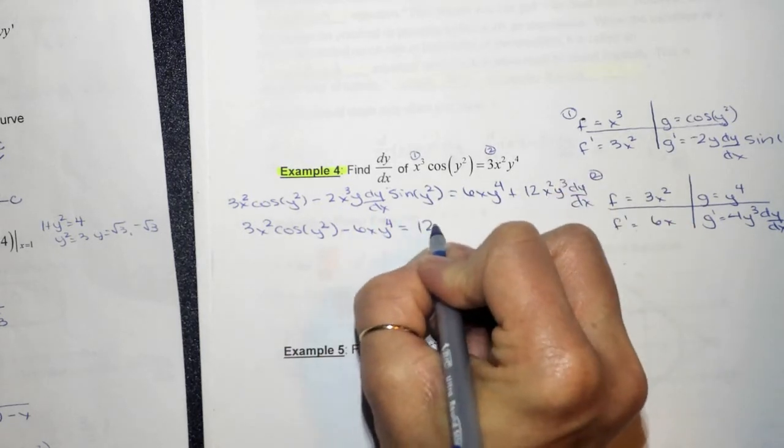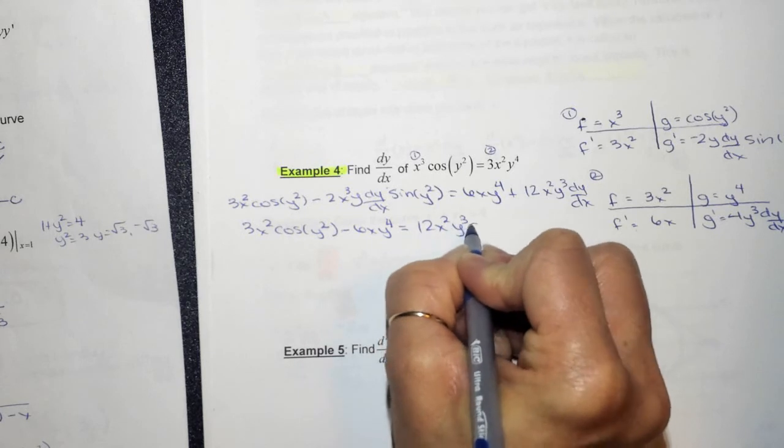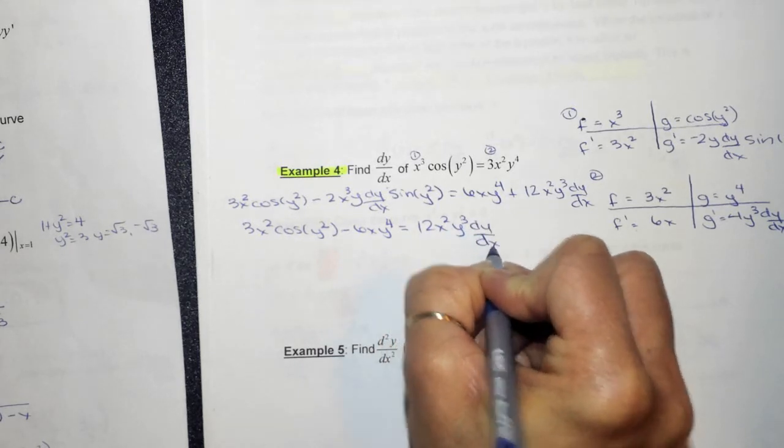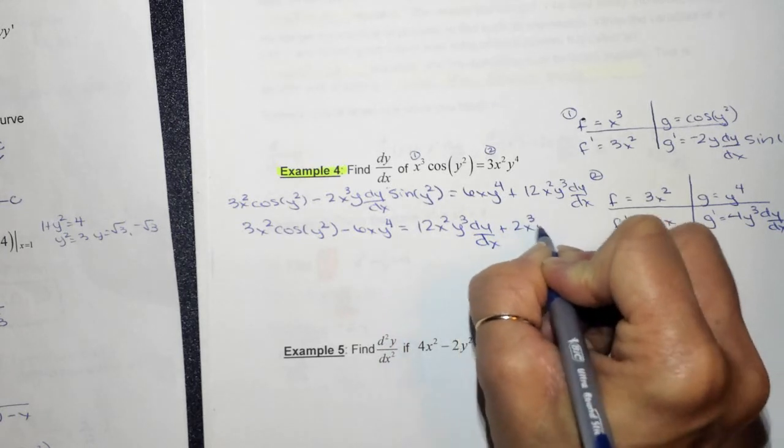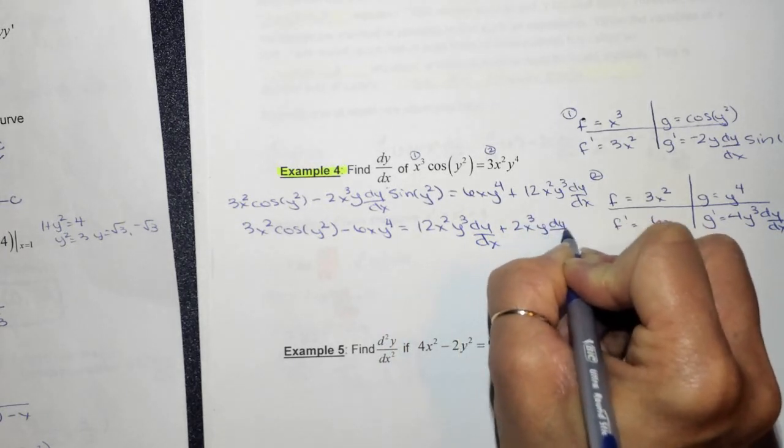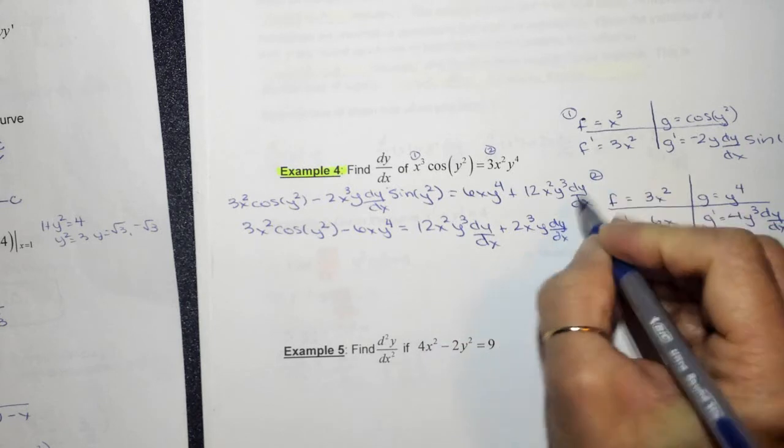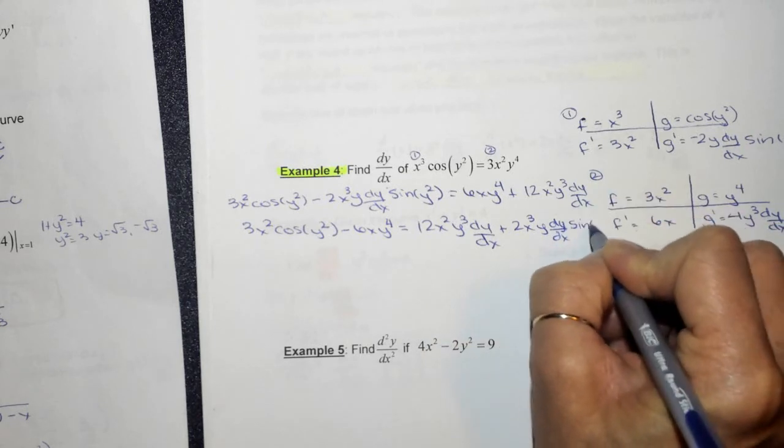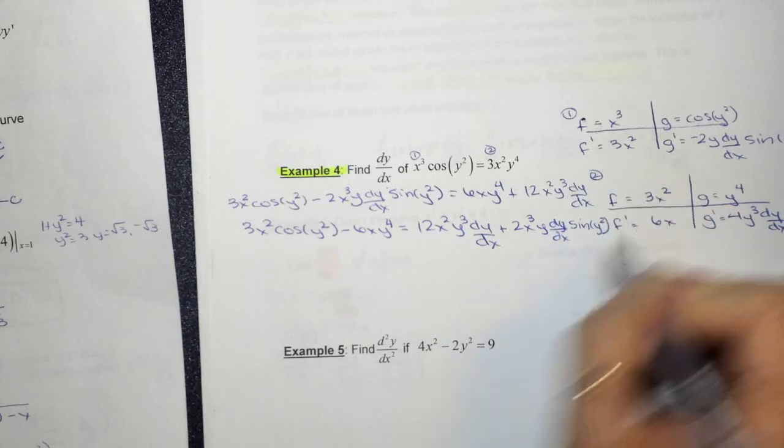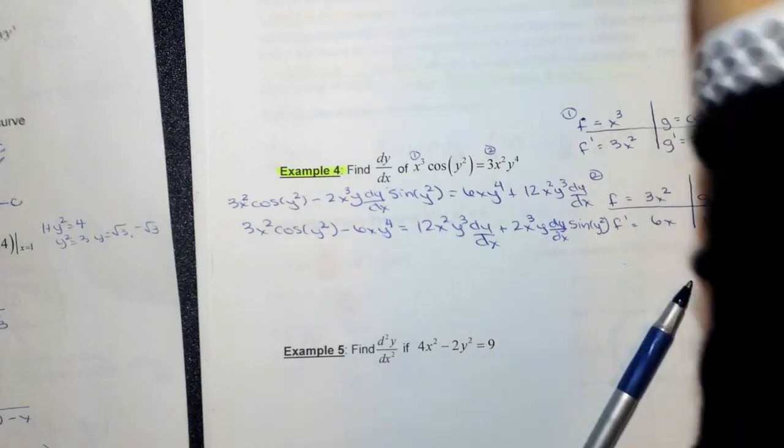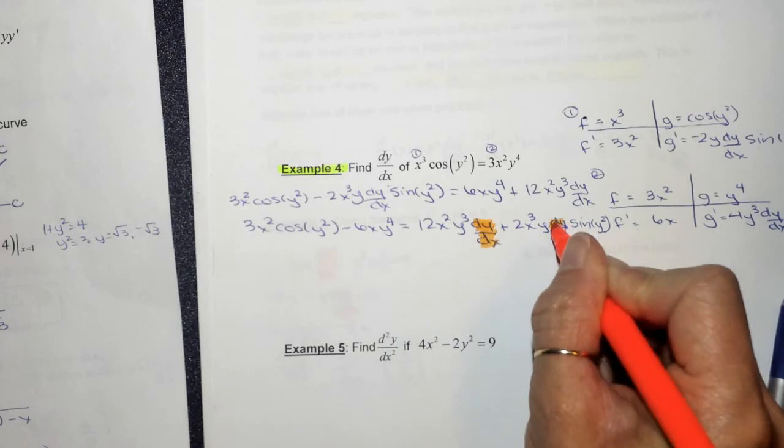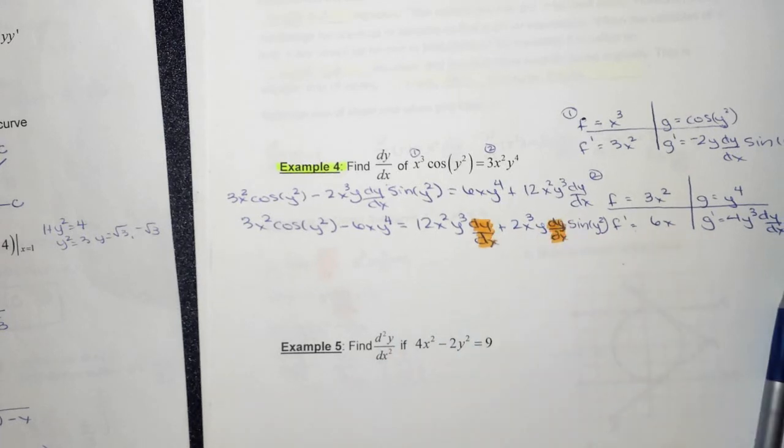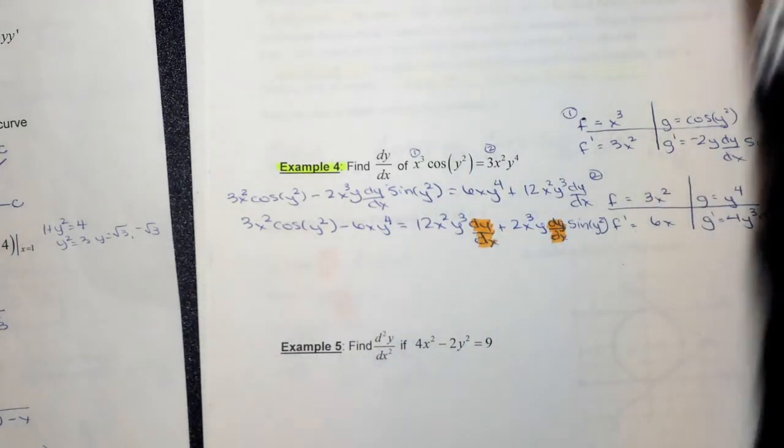Is equal to, I'm adding this. So this is still here. And then I've got plus 2x cubed y dy dx, sine of y squared. Okay. So on this side, you notice we have two terms with the dy dx here.